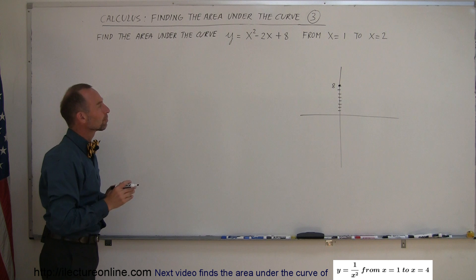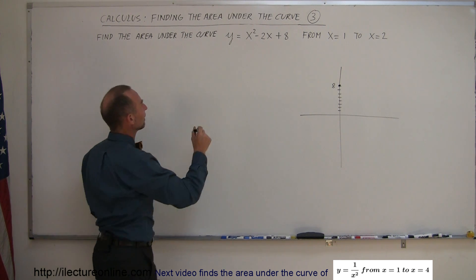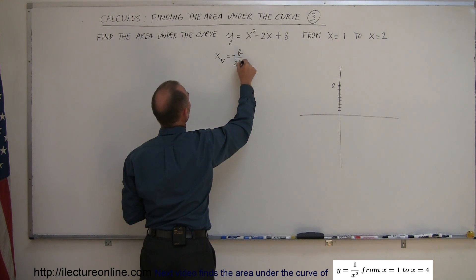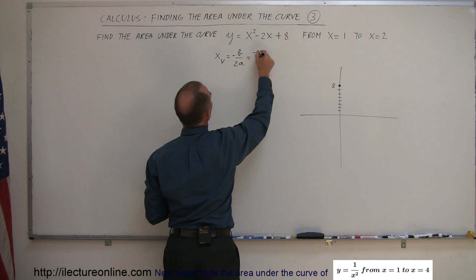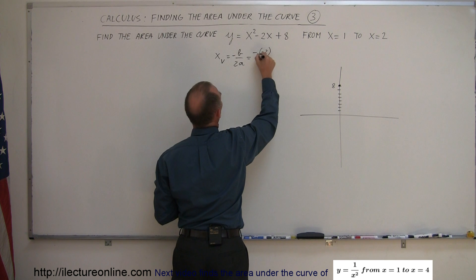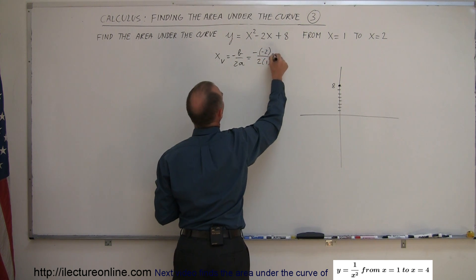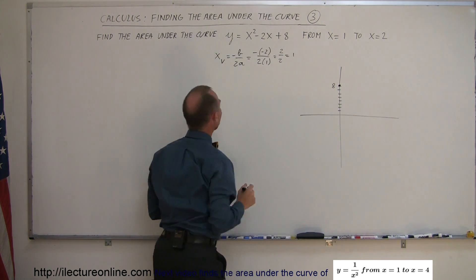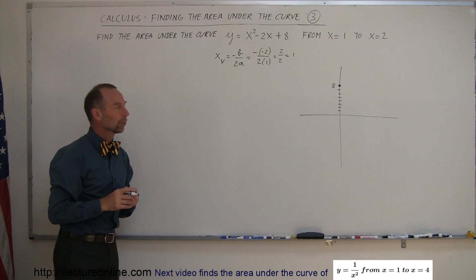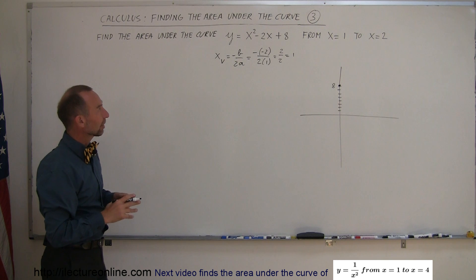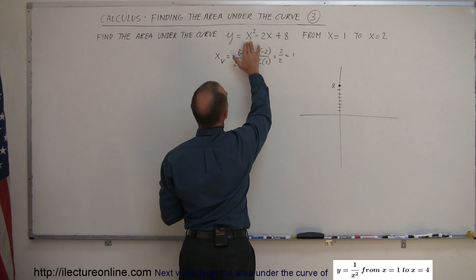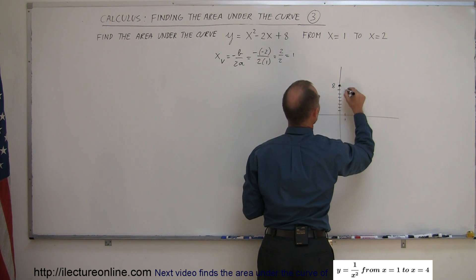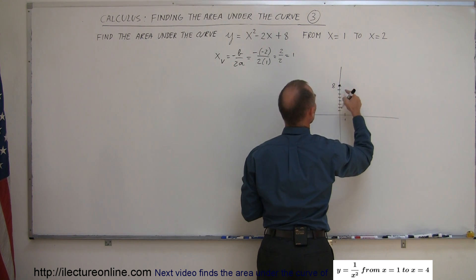Where's the vertex? The vertex would be found by x sub v equals minus b over 2a. In this case, that's equal to minus negative 2 over 2 times 1, which is 2 over 2, which is 1. So when x equals 1, that's where the vertex would be located. If x equals 1, I get 1 minus 2 plus 8, which means 7. So when x equals 1, y is 7. That's the vertex.